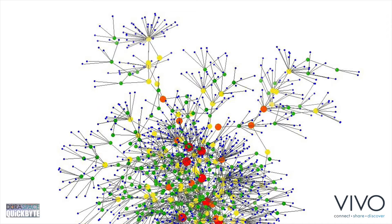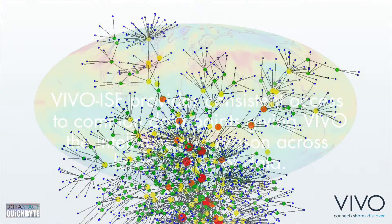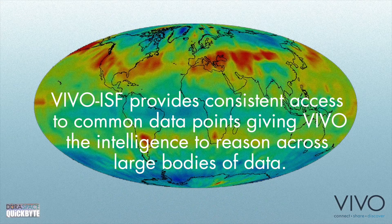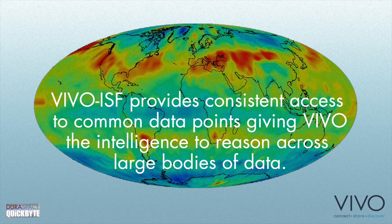A semantic web-based open-source application, VIVO is populated with standardized data using the VIVO ISF — Integrated Semantic Framework — ontology, providing consistent access to common data points developed by the VIVO community. Why is the ontology so important? Because it provides VIVO with intelligence and the ability to reason across large bodies of data.